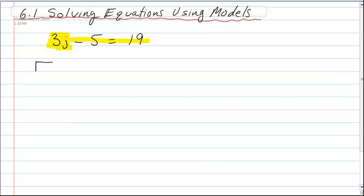So these algebra tiles are going to look like this. One of these represents a variable, so that's 1j, this is 2j, and this is 3j.